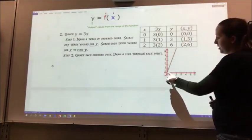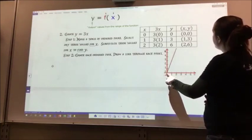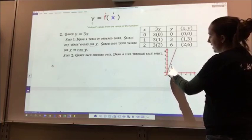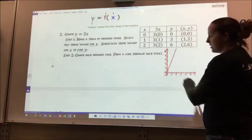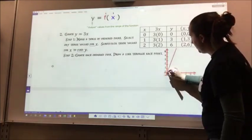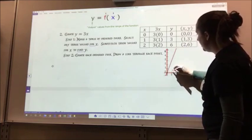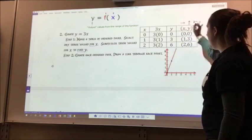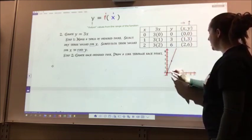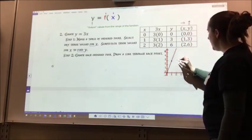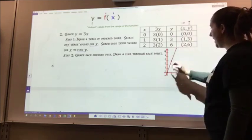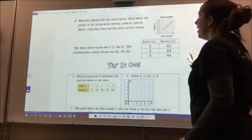0, 0 starts down here. Then 1, 3, I go over 1 and up to 3. There is another point. Here is my first point right here. I go over 1, up to 3, because this tells me to go over and then up. My next one is to go over 2 and up to 6, and then I connected my points.